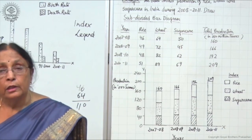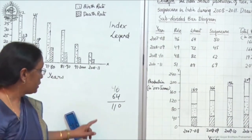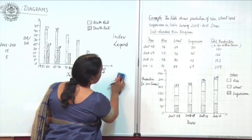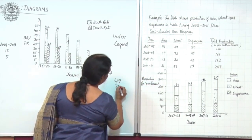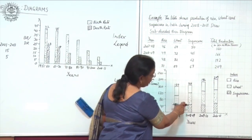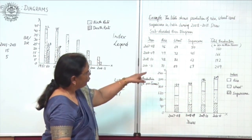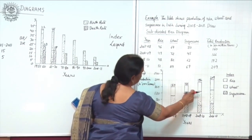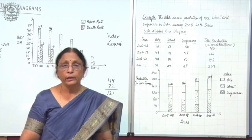Whether there are three, four, five or six variables in the subdivision, you will first add up the values and then draw the further divisions. For the second bar: rice is 49, next wheat is 72, making 121 cumulative. Draw the first division at 49, the next at 121, and the leftover 45 will be for sugarcane. Same way for the remaining bars — add up, mark, and the remainder is the third division.